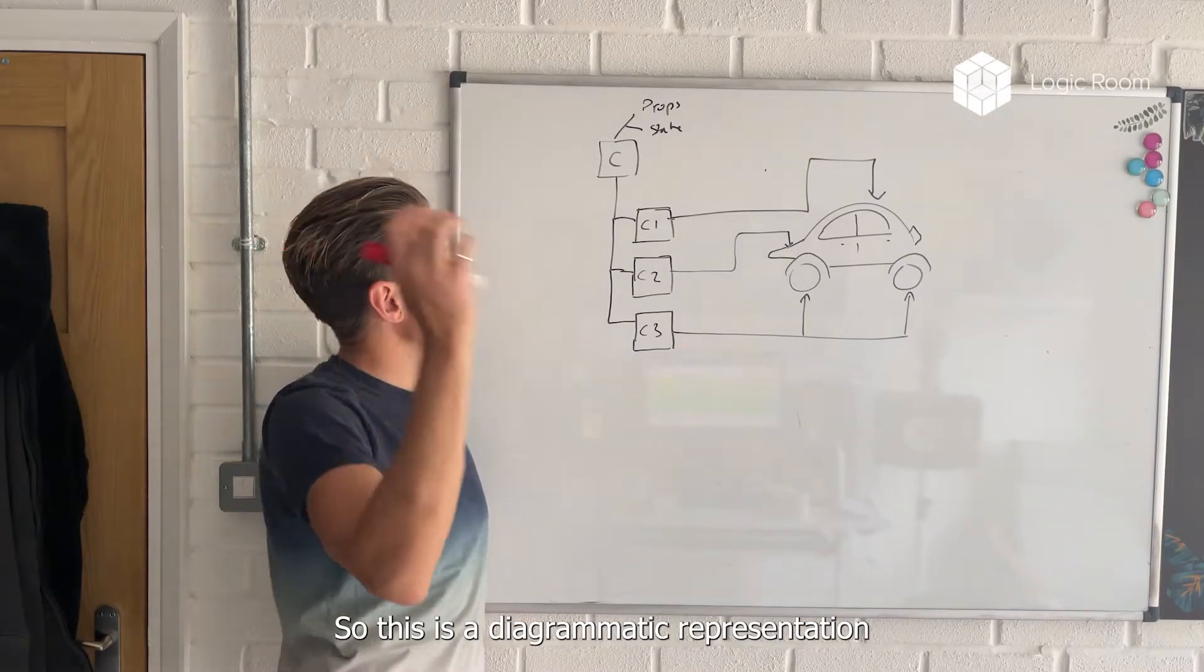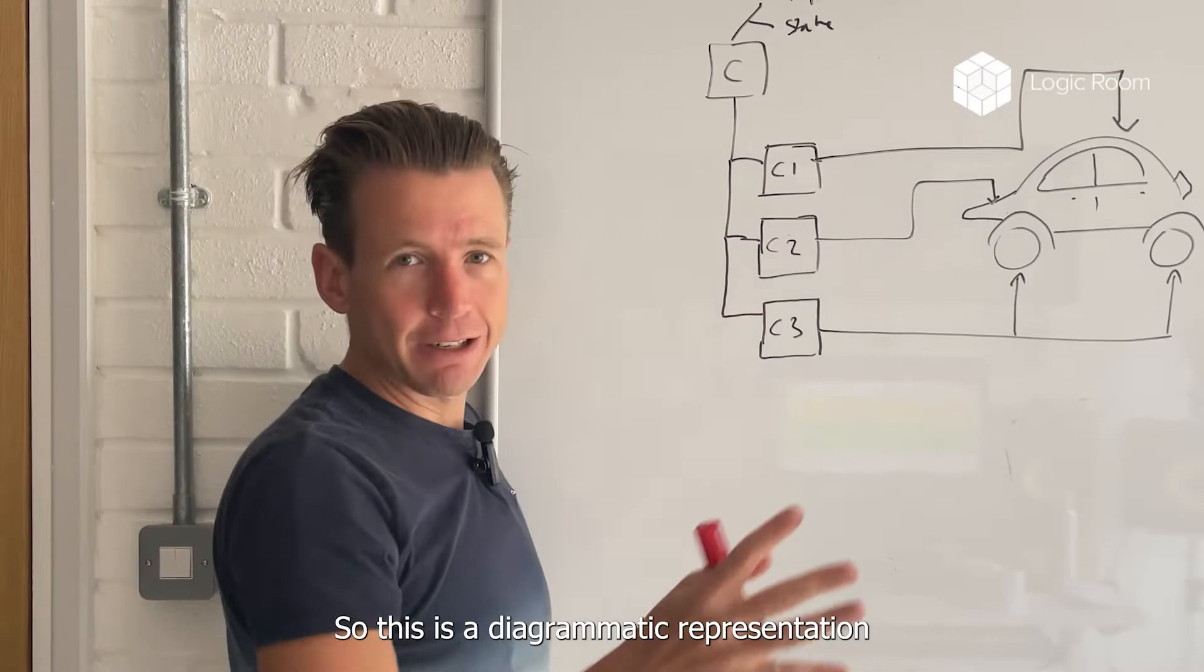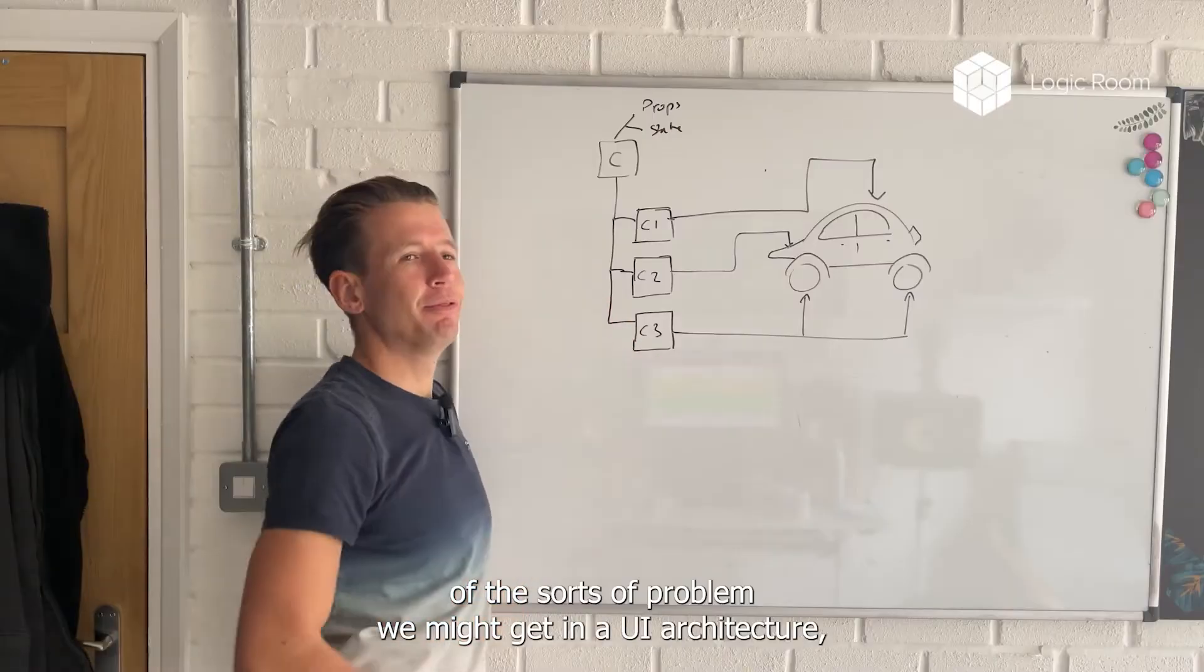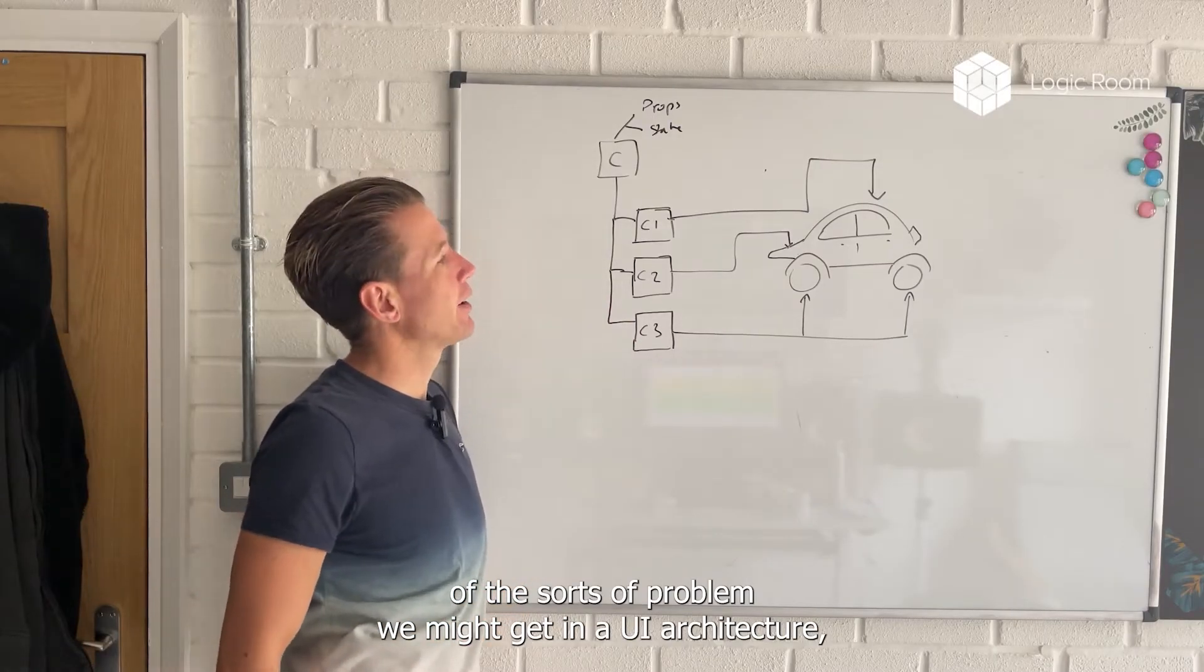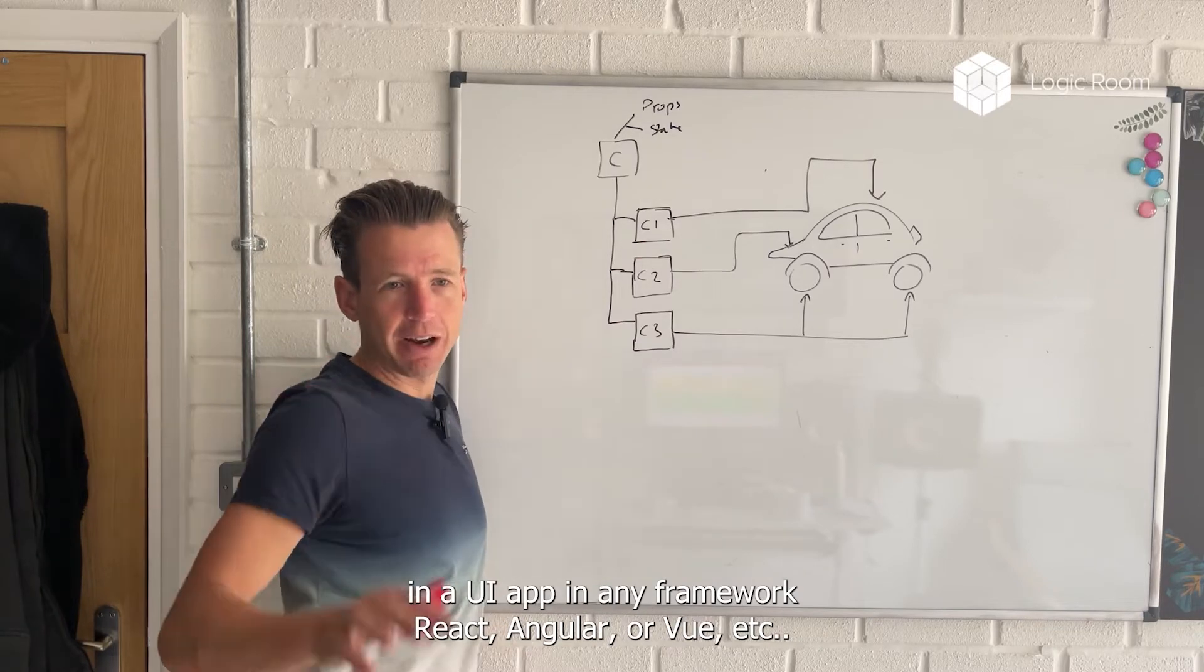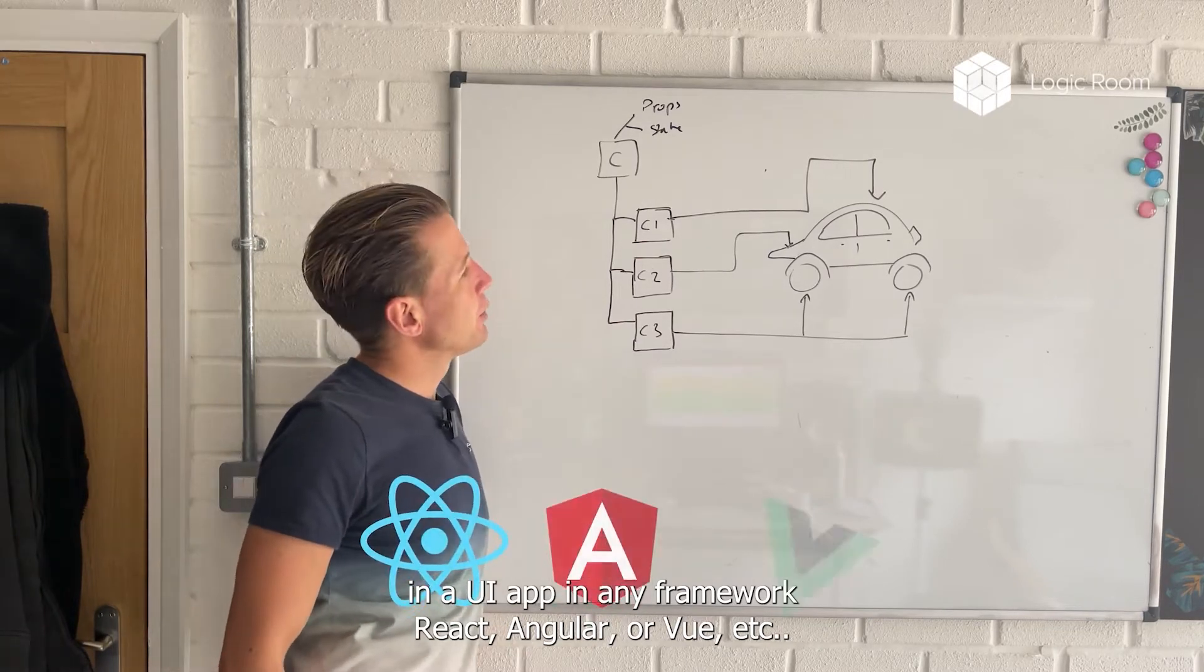So this is a diagrammatic representation of the sorts of problems we might get in the UI architecture, in the UI app, in any framework, React, Angular, Vue, etc.